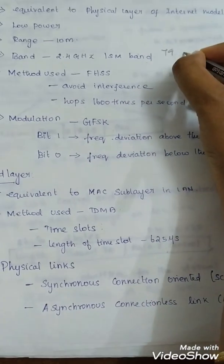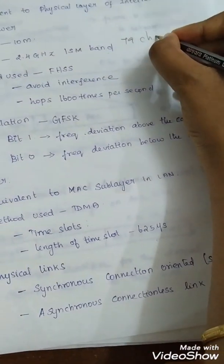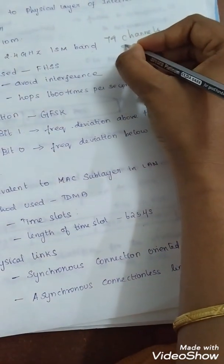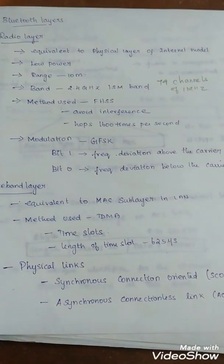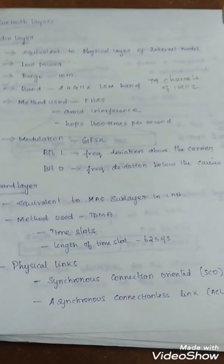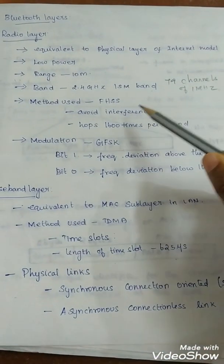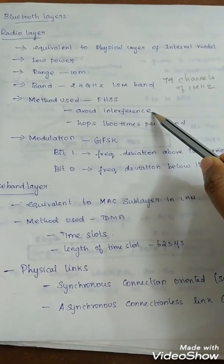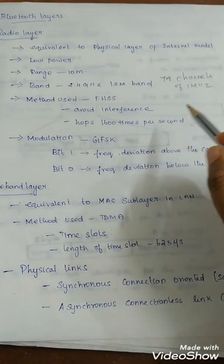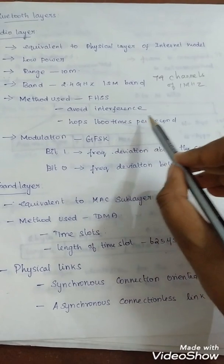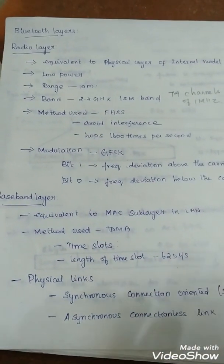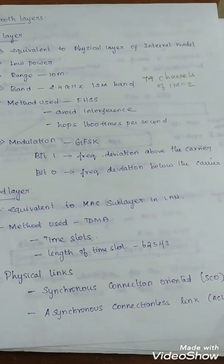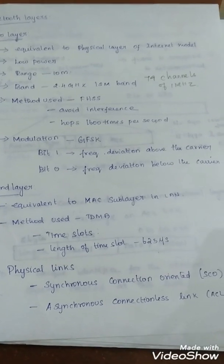It divides 79 channels of 1 MHz each. The method used is Frequency Hopping Spread Spectrum Method, FHS. This method is used to avoid interference from other devices or other networks. Bluetooth hops 1600 times per second, which means each device changes its modulation frequency 1600 times per second.